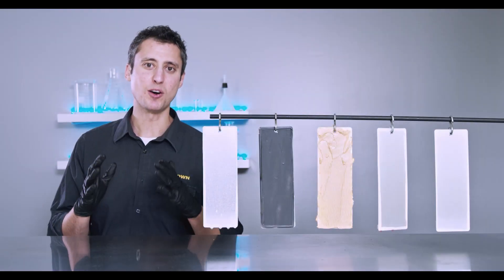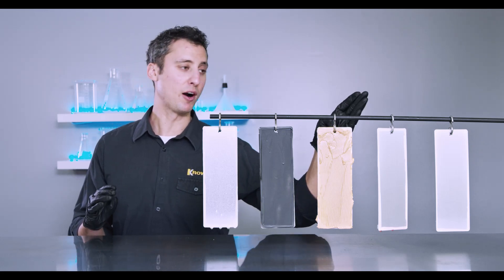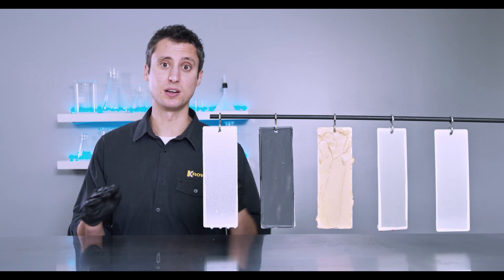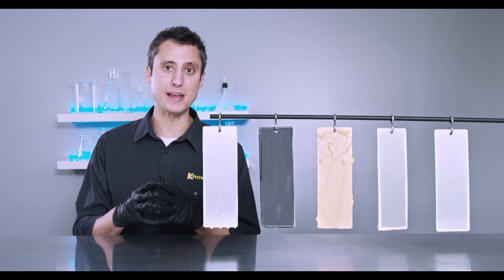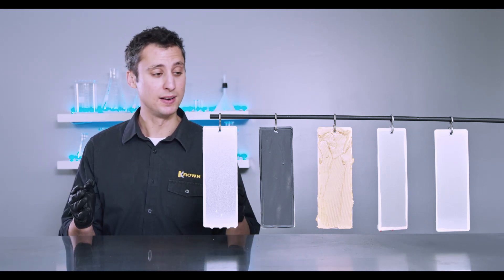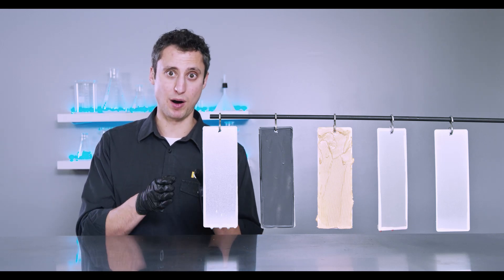So here we have our prepared samples. To walk you through each sample quickly, we've got our first panel completely unprotected, our second panel protected with a popular oil-based rust protection product, our third panel protected with peanut butter, our fourth panel protected with rust paint, and last but not least we have the Crown product.